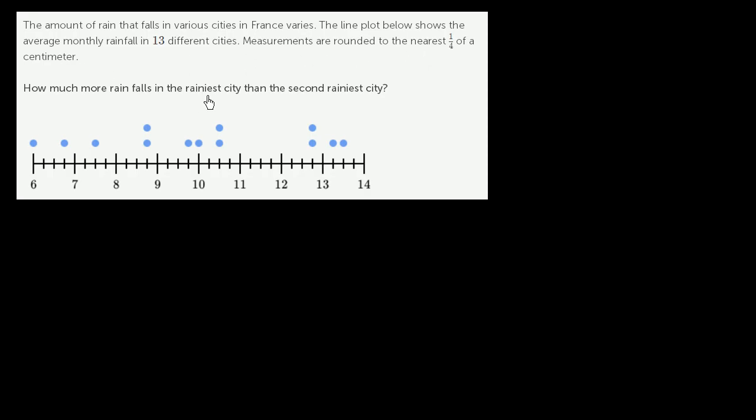How much more rain falls in the rainiest city than the second rainiest city? So let's make sure we understand what they're calling a line plot right over here. Each of these dots represents one of the cities whose average monthly rainfall was measured.